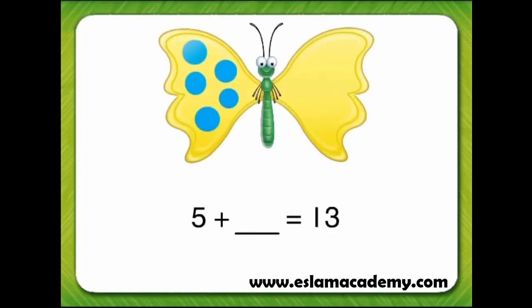Here's another butterfly to help us find the missing addend. 5 plus some number equals 13.